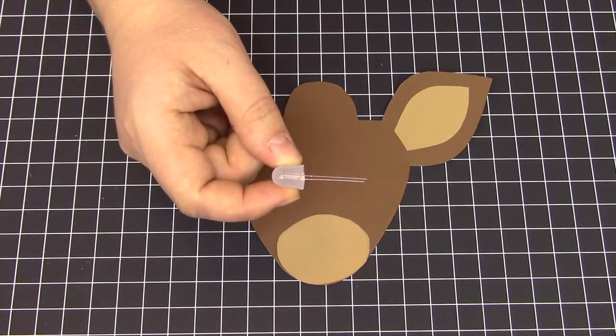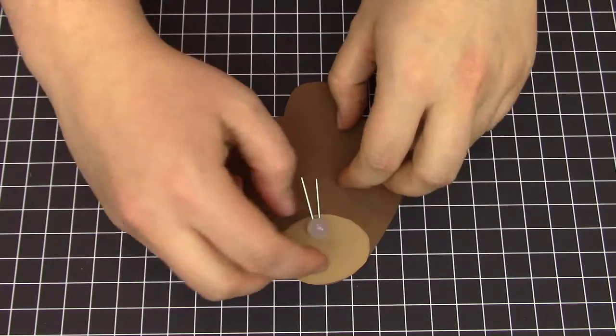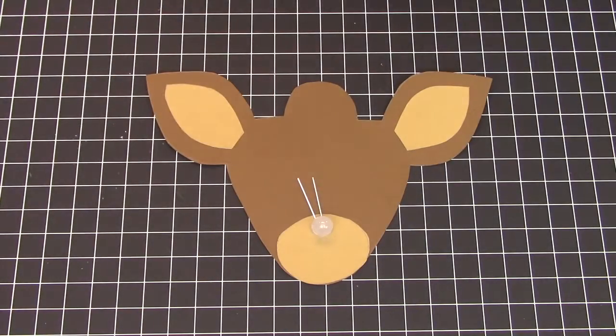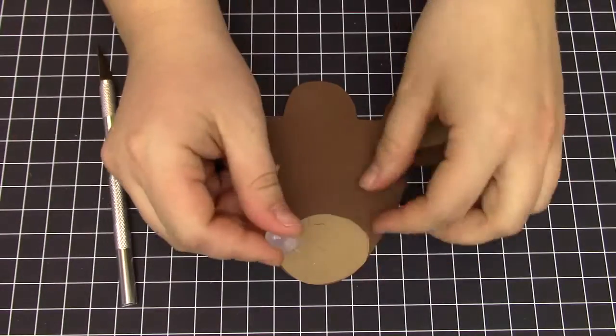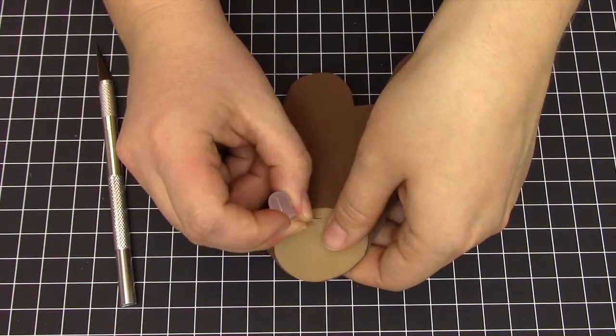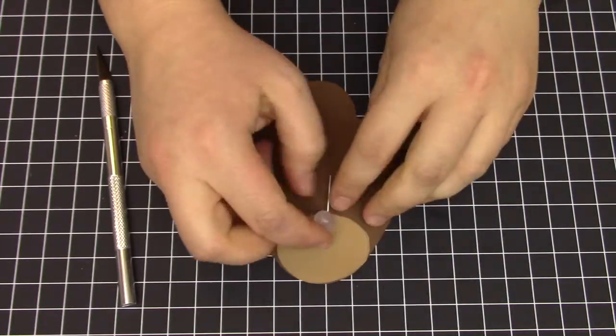Next, take your red LED and bend the legs 90 degrees, and place it on your reindeer head about where you want the nose to go. Grab an exacto knife and cut a small slit under the LED. Take the longer LED leg and slide it through this slit so that it is on the back side of the deer.